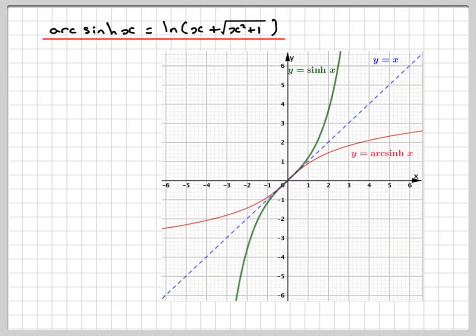And then if we look at the graph, here is the graph of sinh of x. If you draw the line y is equal to x, you should have equal aspect axes here. The red graph here represents arcsinh of x, which can also be represented by this.